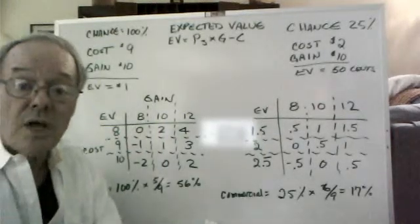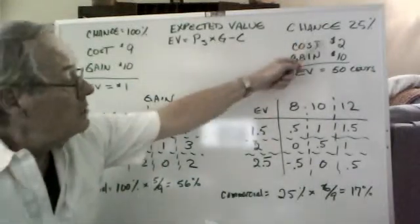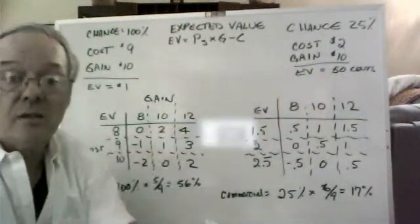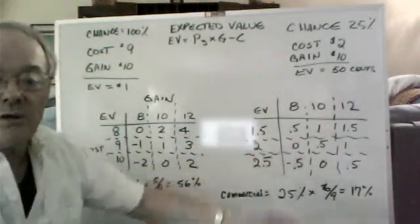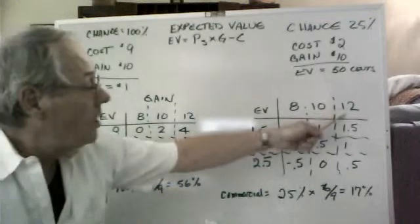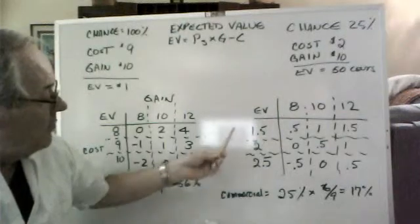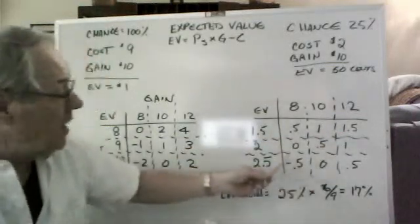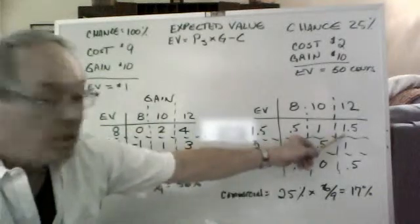Now, if you remember, we also did a transaction where we talked about the chance of success being only 25%. And there, our cost was much lower at $2. Our gain was still $10. And the expected value was $0.50. So we can make the same nine-box pattern again now for the nine scenarios associated with our costs. We still have 8, 10, or 12 associated with the gain. But maybe the cost might vary from $1.50 to $2.50.